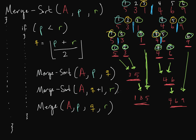We've completed the second merge sort call for our original array. The left side (1, 3, 5) and right side (4, 6, 9) are each sorted. Now we merge them. Is 1 less than 4? Yes. Is 3 less than 4? Yes. Is 5 less than 4? No, so we bring 4 down. Is 5 less than 6? Yes. Nothing remains on the left, so we bring down 6 and 9. The array is now fully sorted.